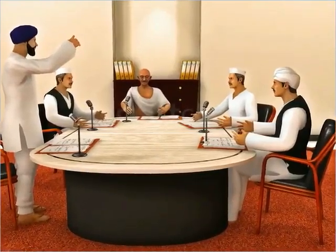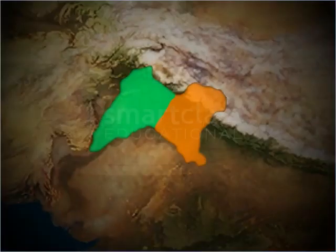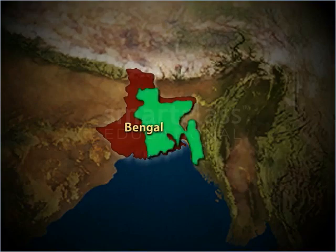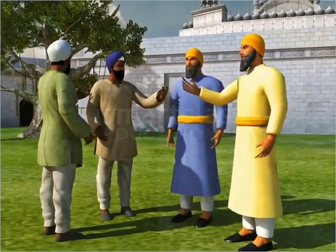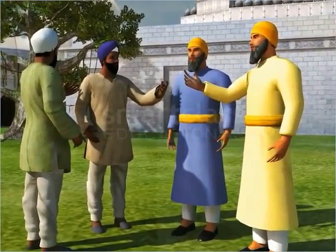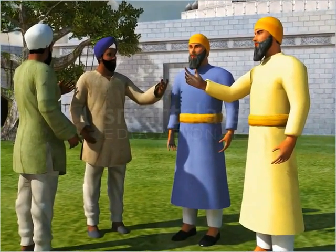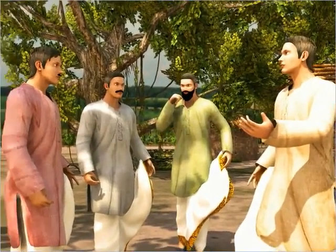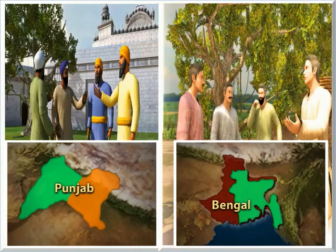In March 1947, the Congress High Command voted for dividing Punjab into two halves — one with a Muslim majority and the other with a Hindu and Sikh majority. The Congress proposed the application of a similar principle to Bengal. Sikh leaders and congressmen in Punjab were convinced that Muslim majorities would dictate terms. Some Bengali Hindus also feared losing political power. These groups considered themselves a numerical minority and therefore supported partition in order to retain their power and position.